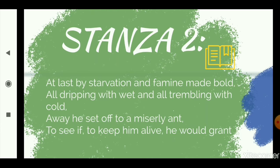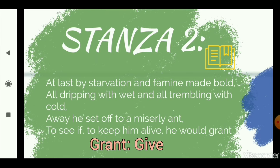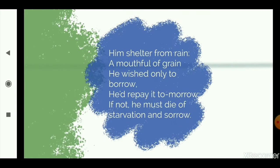Away he set off to a miserly ant. He goes out of his home — it is already raining, it is very cold — and he sets off. Sets off means to go ahead, to start a journey. He sets off to a miserly ant. Miserly means very poor. He goes to the place of a very poor ant to see if, to keep him alive, he would grant him something. To grant is to give something. He wanted to see if the ant would give him something to help him survive the winter months.